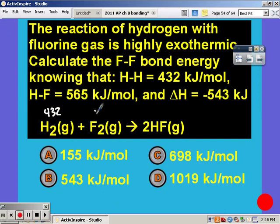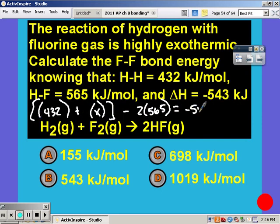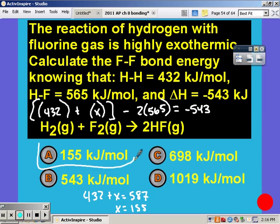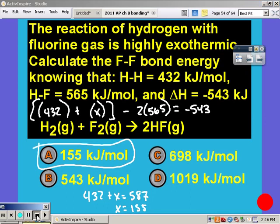So in this problem you have your HH which is 432, we don't know FF, and we know that each HF is 565 and I know that I have two of them. I don't know my FF bond energy but I do know that my delta H for the reaction is negative 543 kilojoules per mole. So solving it algebraically, I multiply 2 times 565 and add it to negative 543 and then subtracted 432.